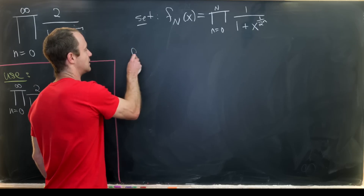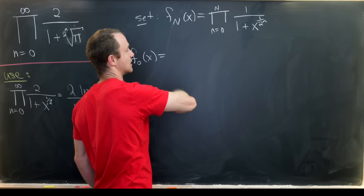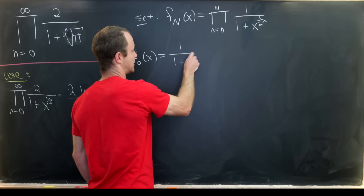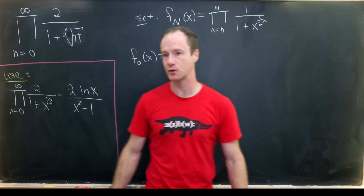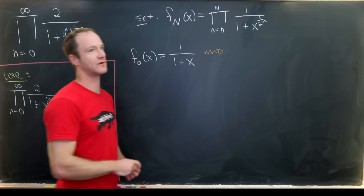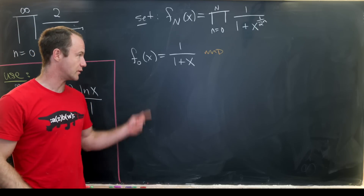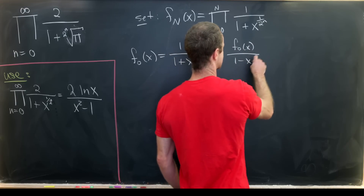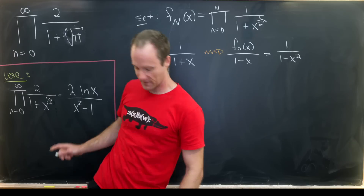Let's look at a couple of values. f sub zero of x is the product as n goes from zero to zero of one over one plus x to the one, so that's one over one plus x. Now, our final expression has an x squared minus one in the denominator, which motivates us to involve x squared minus one. We can do that by multiplying both sides by one over one minus x, giving us f zero of x over one minus x equals one over one minus x squared.